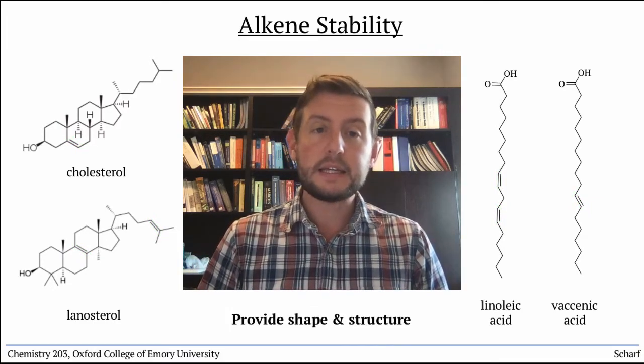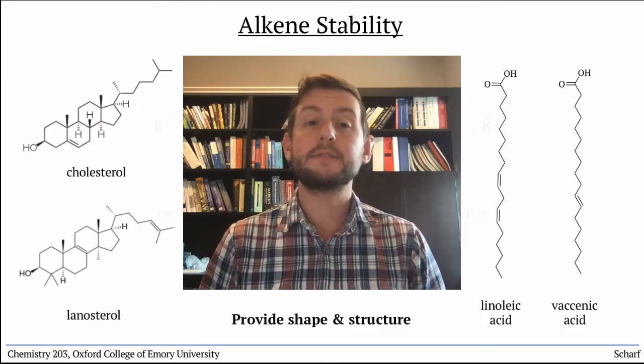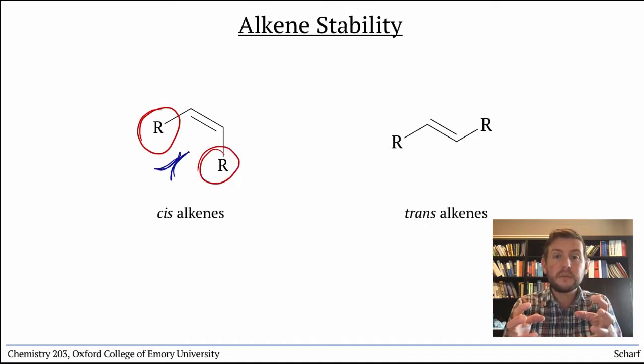Among alkenes, there are differences in stability. Some are more stable than others. In general, cis-alkenes tend to be less stable than trans-alkenes because when large substituents are cis to one another, there's electron-electron repulsion between them. This is sometimes called steric clash.